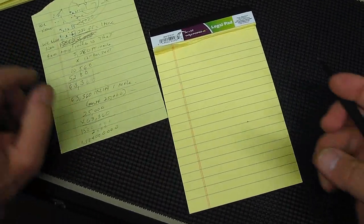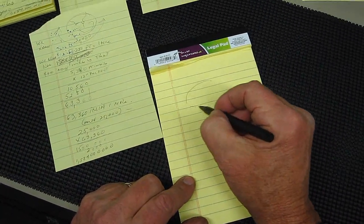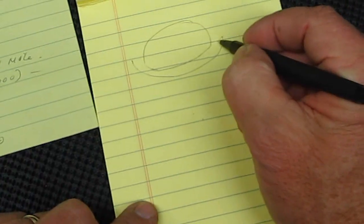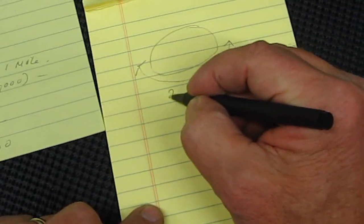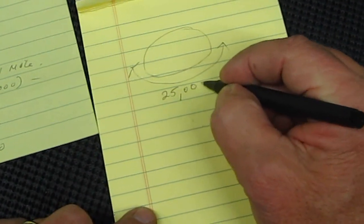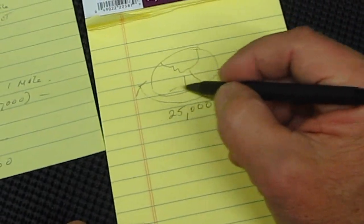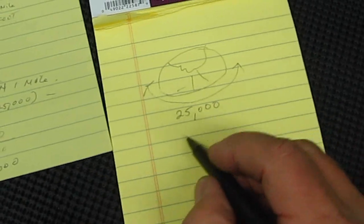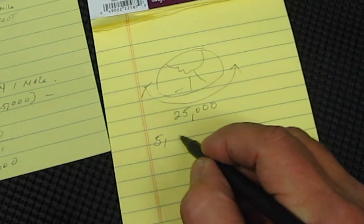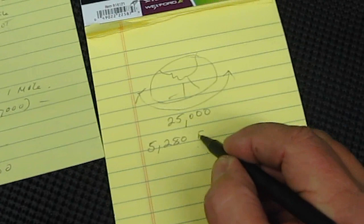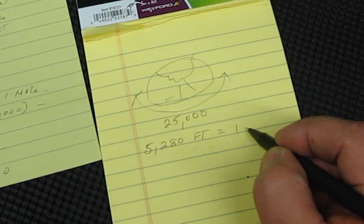Okay, here's what we know. First of all, we know the Earth is approximately 25,000 miles in circumference, and we also know that 5,280 feet equals one mile.